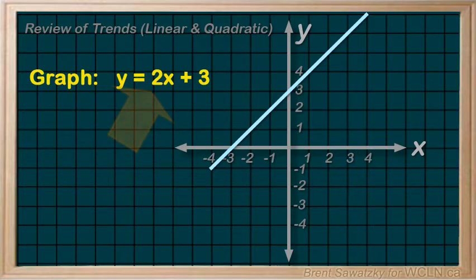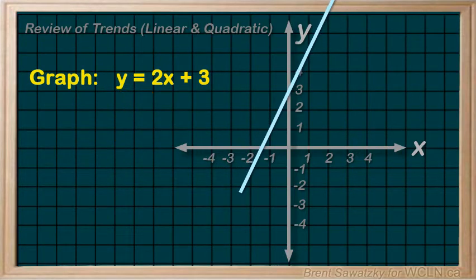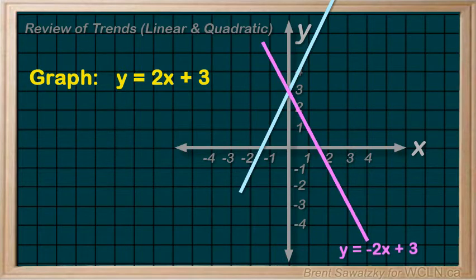Then we use the slope m to decide how steep that line is. In this case, a rise over run of 2. Now, if the slope was negative, it would drop to the right or be reflected vertically.